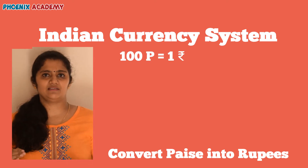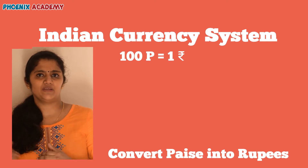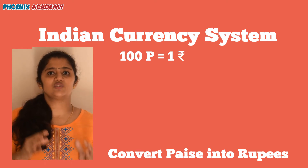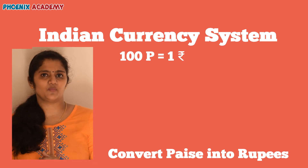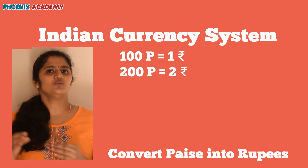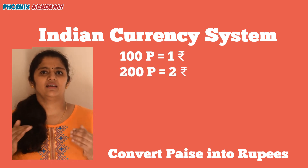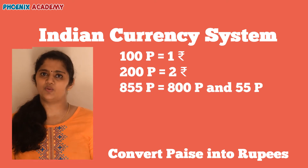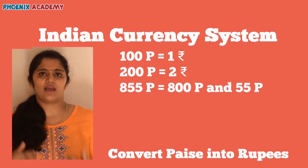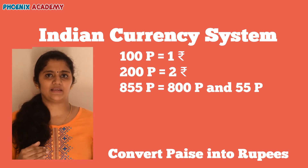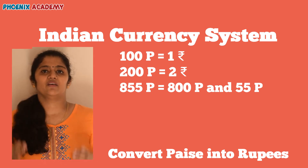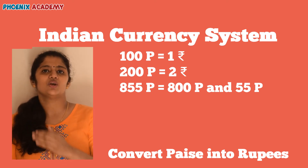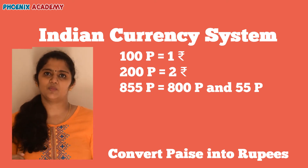Let's convert paise into rupees. 100 paise is equal to 1 rupee. So what is 200 paise in rupees? 2 rupees. Let's convert 855 paise into rupees. First you calculate 800 paise into rupees. When the paise is in hundreds, remove the two zeros to get the amount in rupees.